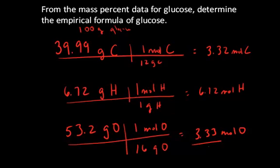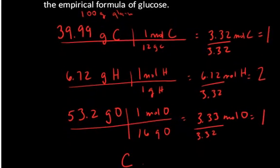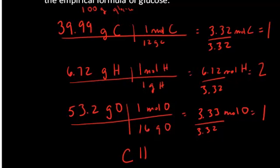From here, I need to divide all of these number of moles by the smallest number of moles, which is 3.32 or 3.3 if rounded off. Dividing by 3.32, I end up with a whole number ratio of 1 mole of carbon to 2 moles of hydrogen to 1 mole of oxygen. This gives me my empirical formula for glucose, which is CH2O.